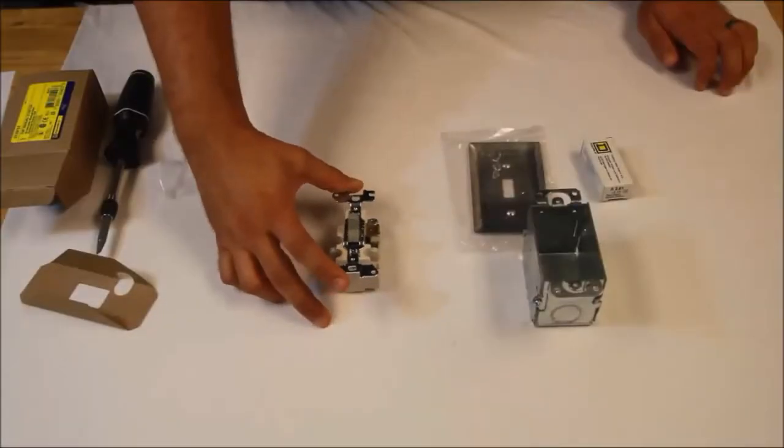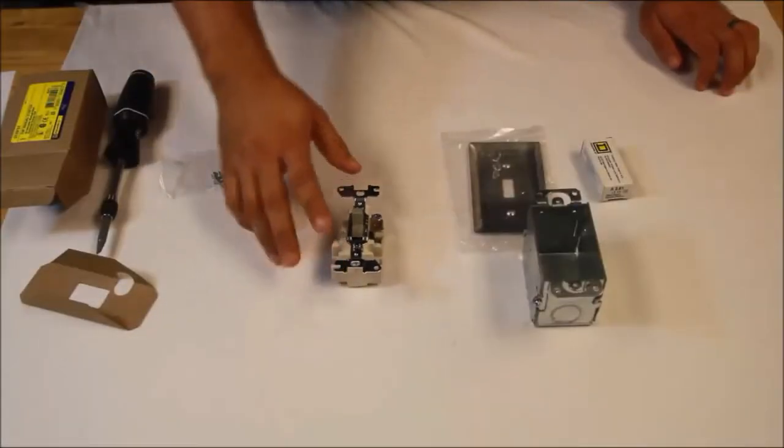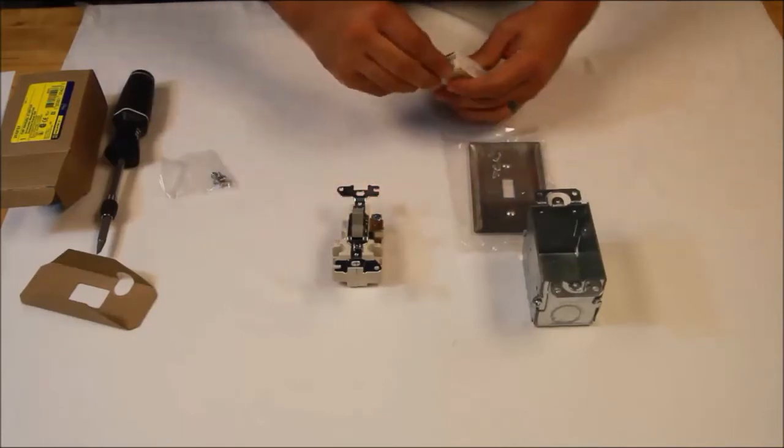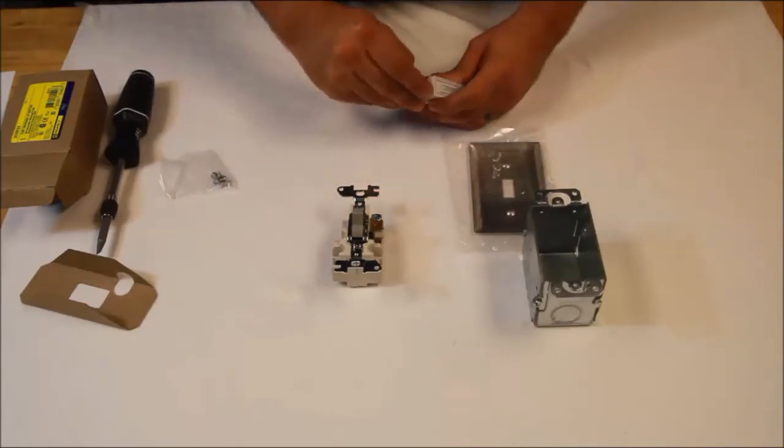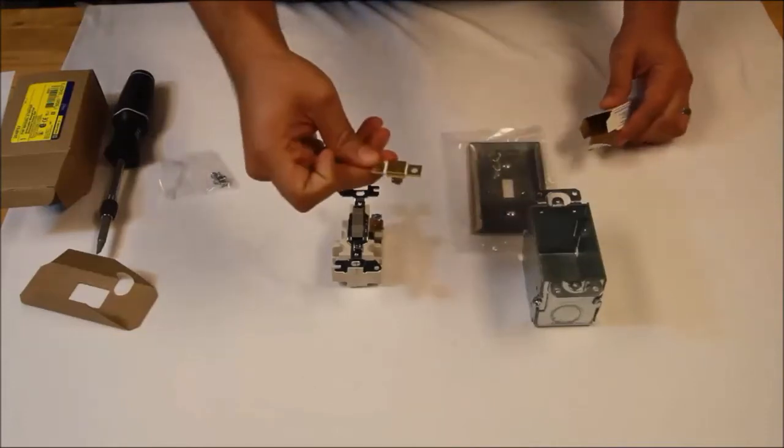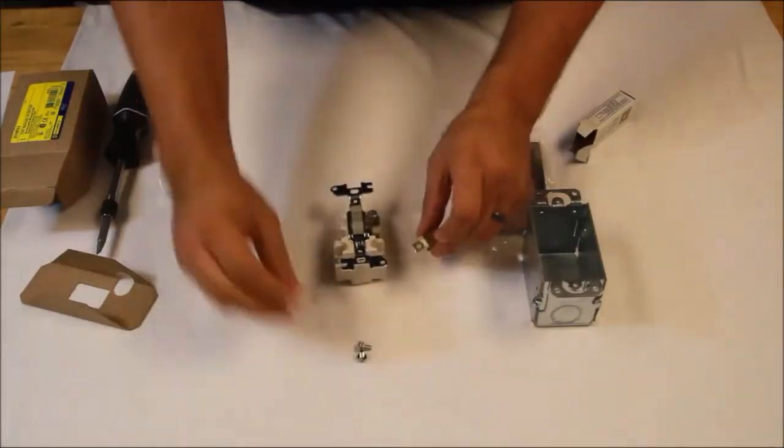The fractional horsepower manual motor starters from Square D come without thermal units. Thermal units are sized based on our thermal unit selection table for full load amperage. These devices will come pre-packaged with one thermal unit as well as two mounting screws.